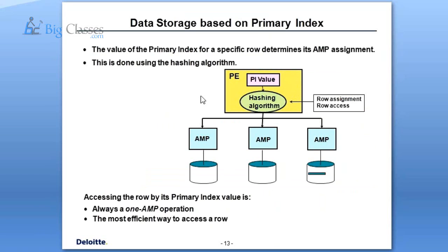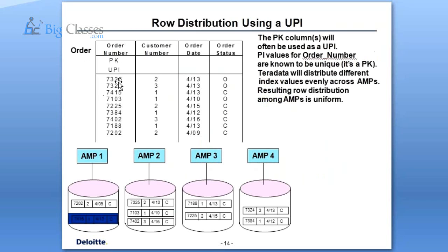Skewed means non-uniform or less uniform distribution — skewness. Skewness is one of the important factors in Teradata which causes performance issues. Because of the non-unique primary index candidate, the data may not distribute evenly across AMPs.